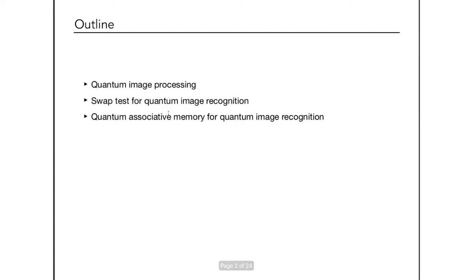This is the rough outline. I will start with a brief introduction to quantum image processing, then discuss the swap test, which acts as the main tool for our image recognition protocol. In the last part, I will discuss quantum associative memory and how we have used it to build our protocol.